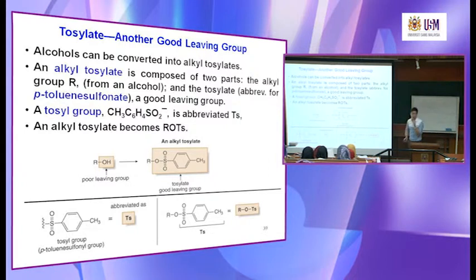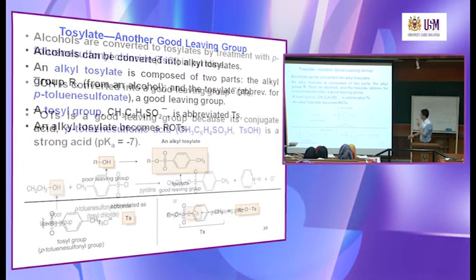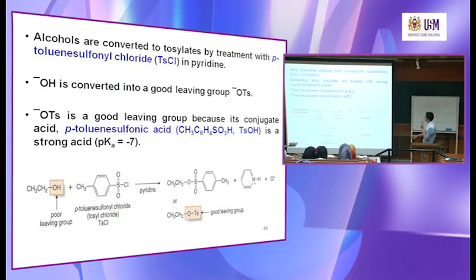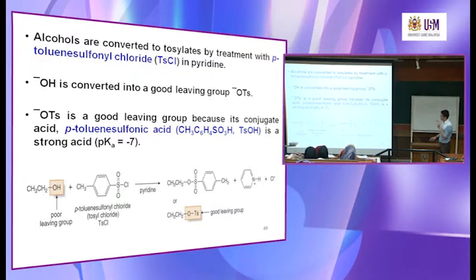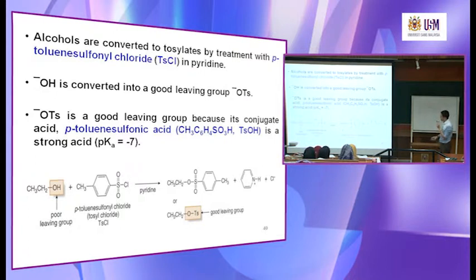This is a new leaving group we are going to learn. You can react your alcohol with tosyl chloride. What is tosyl chloride? Tosyl chloride means TsCl. The structure is: the toluene part (CH₃ on a benzene ring), a sulfonate functional group, and a Cl. This is abbreviated as TsCl — tosyl chloride.